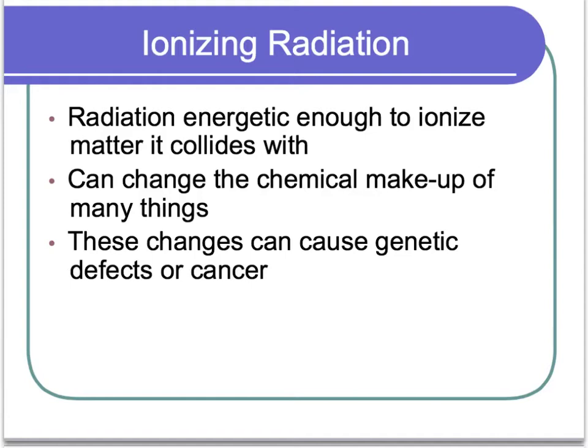When we talk about radiation particles, another word for those is ionizing radiation. We say it's ionizing because the radiation is energetic enough to ionize, or split apart, matter that it collides with. Ionizing radiation can cause change in the actual chemical makeup or the elemental makeup of things.